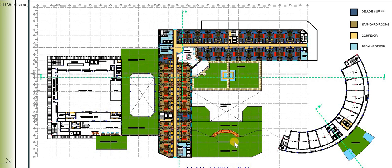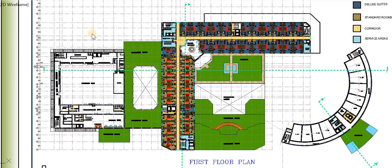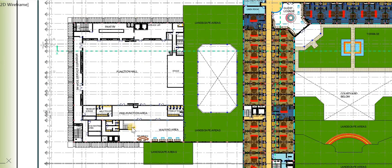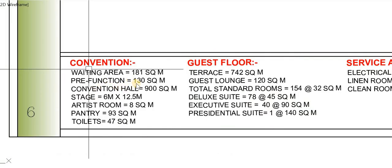The next floor plan is the first floor plan, which is completely for the guests. This floor plan consists of the function hall, which is also a banquet, guest rooms, and the service apartment. The first floor of the convention block consists of the waiting area, the pre-function area, and a big function hall with a three-meter-wide service corridor.